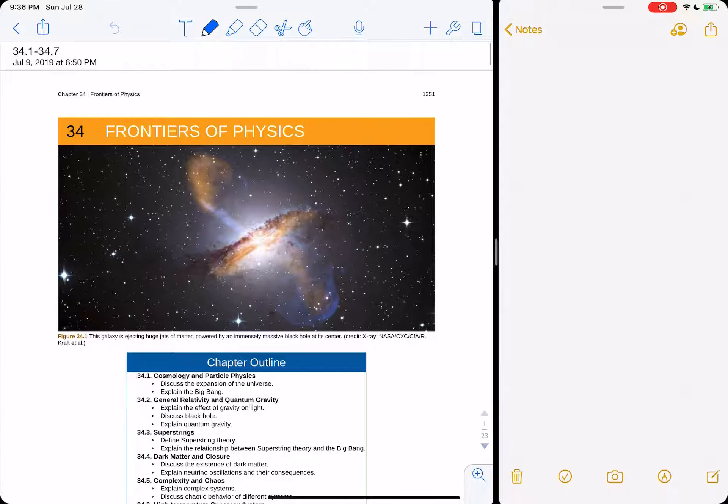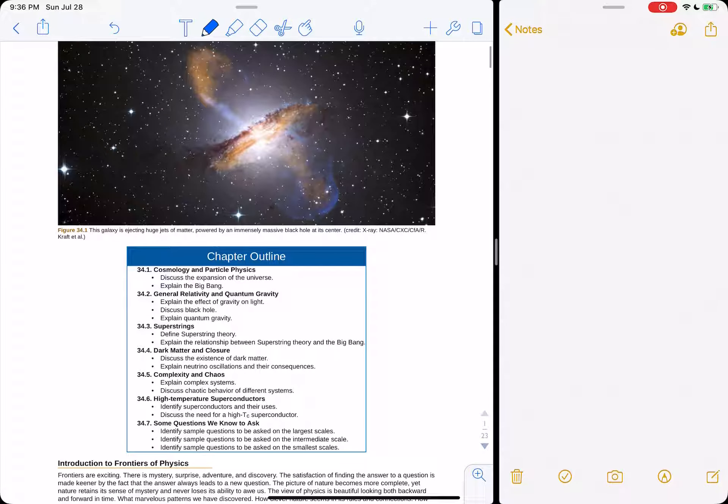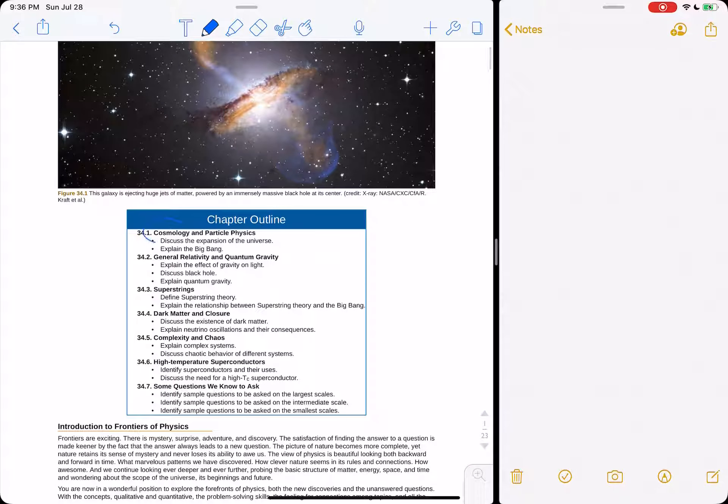Okay, so now we'll talk about the frontiers of physics, the current best thing. Look at this, the galaxy here shooting these jets, the black hole at the center of that galaxy shooting these massive jets out into space. This is a combination image of visible light and x-ray together. So we're going to talk about cosmology and how that relates to particle physics that we just talked about.